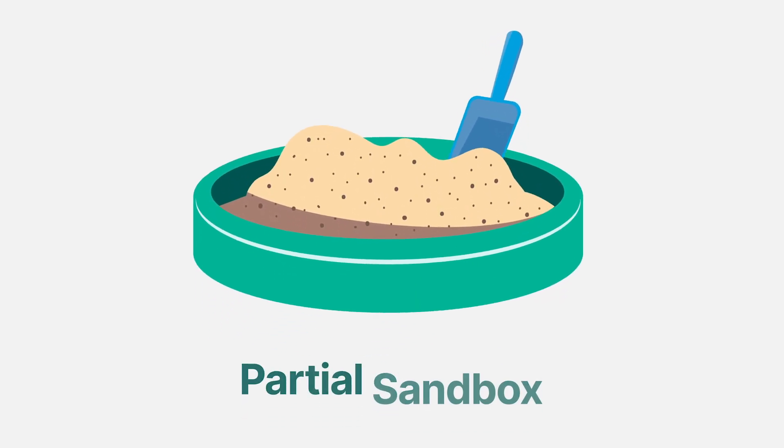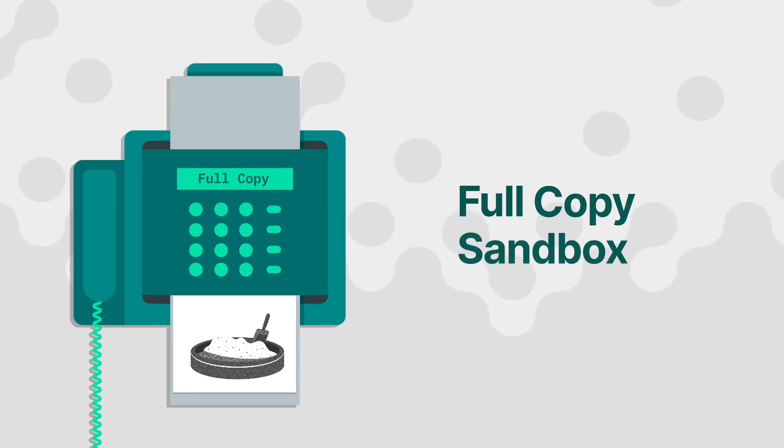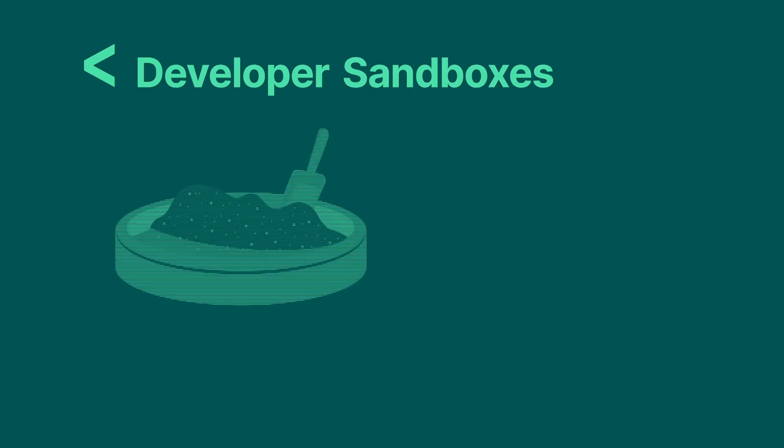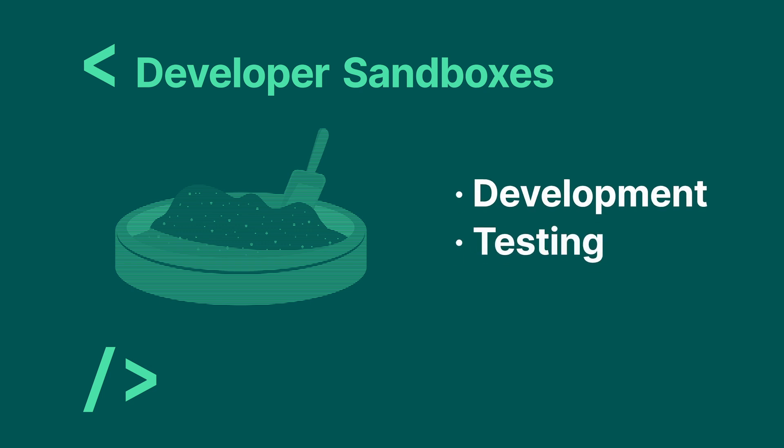There are three primary Salesforce Sandbox types. First, Partial Sandbox, which includes a copy of your production org's configuration and a sample of its data. Second, a Full Copy Sandbox, which is a complete replica of your production org's data and configuration. And lastly, Developer Sandboxes, which are environments for development and testing that usually have no data.